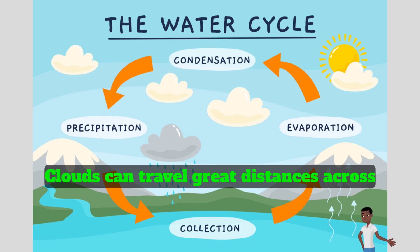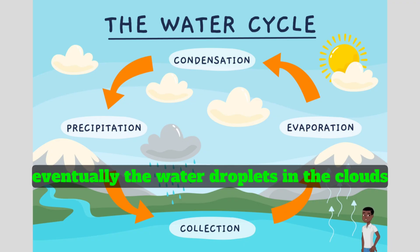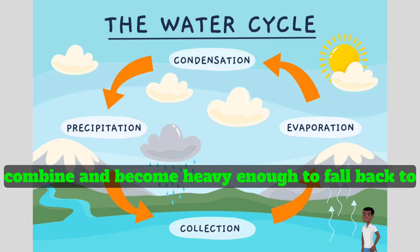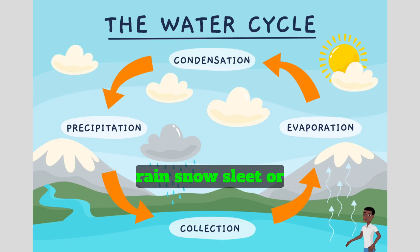Clouds can travel great distances across the sky, carrying water with them. Eventually, the water droplets in the clouds combine and become heavy enough to fall back to the Earth as precipitation — rain, snow, sleet, or hail.